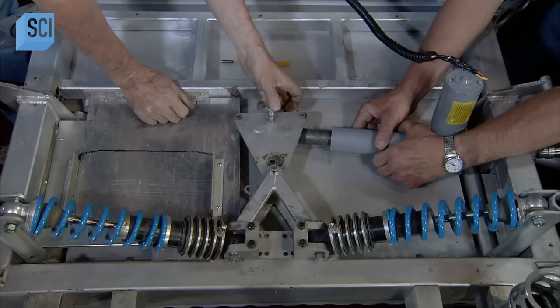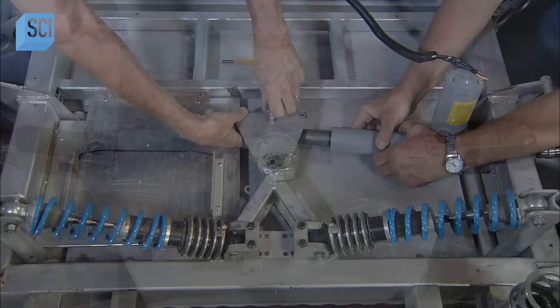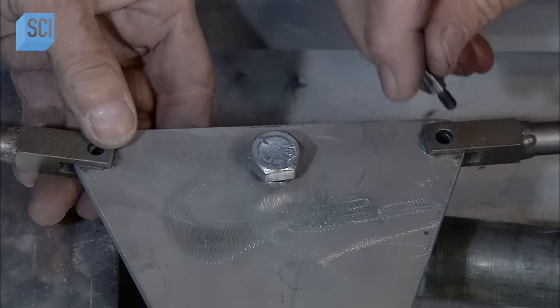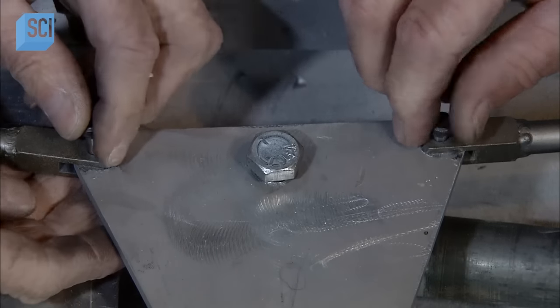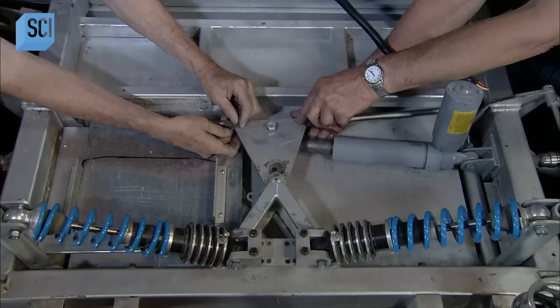They connect the actuator drive bars to the steering plate. Together, the steering plate and actuators give the Lunar Rover an incredibly tight turning radius of just over 3 meters.